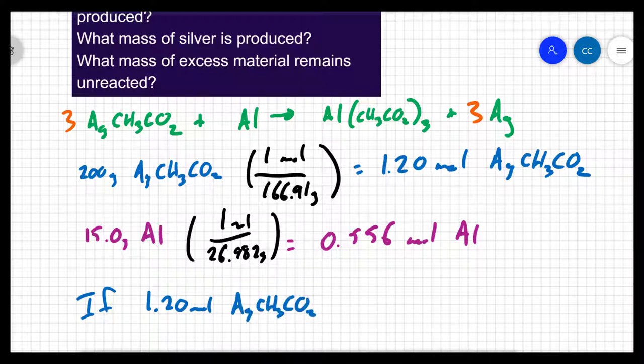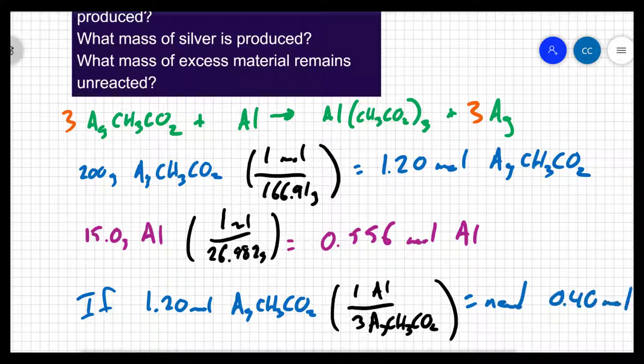Well, according to my balanced equation, there is one aluminum for every three silver acetates. So what this statement is saying is if I have 1.2 moles of silver acetate, I need 0.40 moles of aluminum.